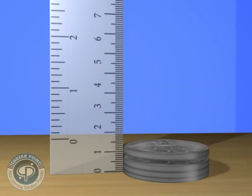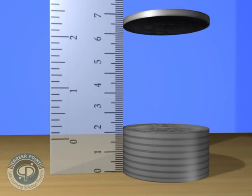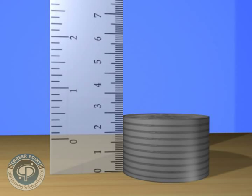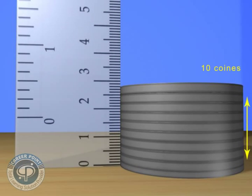Take 10 coins and place them one upon another. Now measure the thickness of this pile of coins by using a meter scale. This reading is the total thickness of 10 coins.